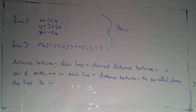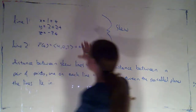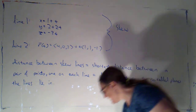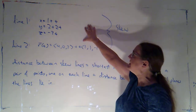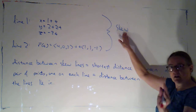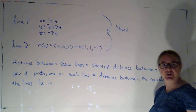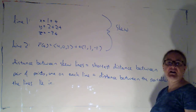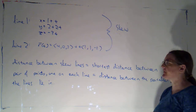I want to take a look at one more distance problem, and that's the distance between skew lines. I've given you two lines here and told you that they're skew. We discussed earlier how we would prove they were skew — we would rule out the other two possibilities: they're not parallel, and they're not intersecting.